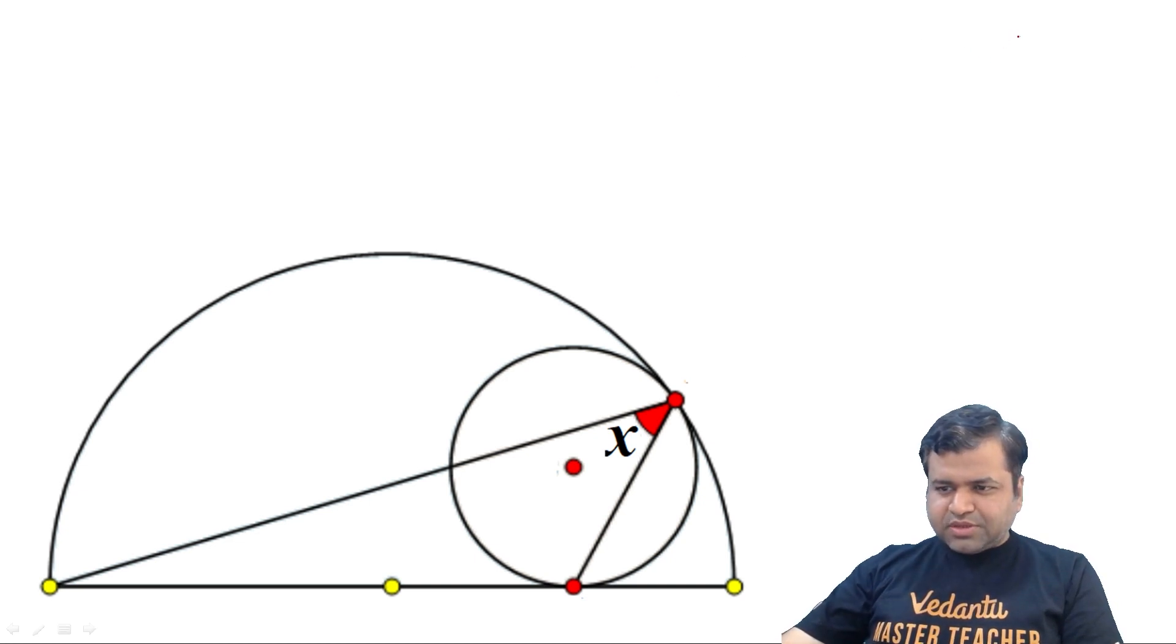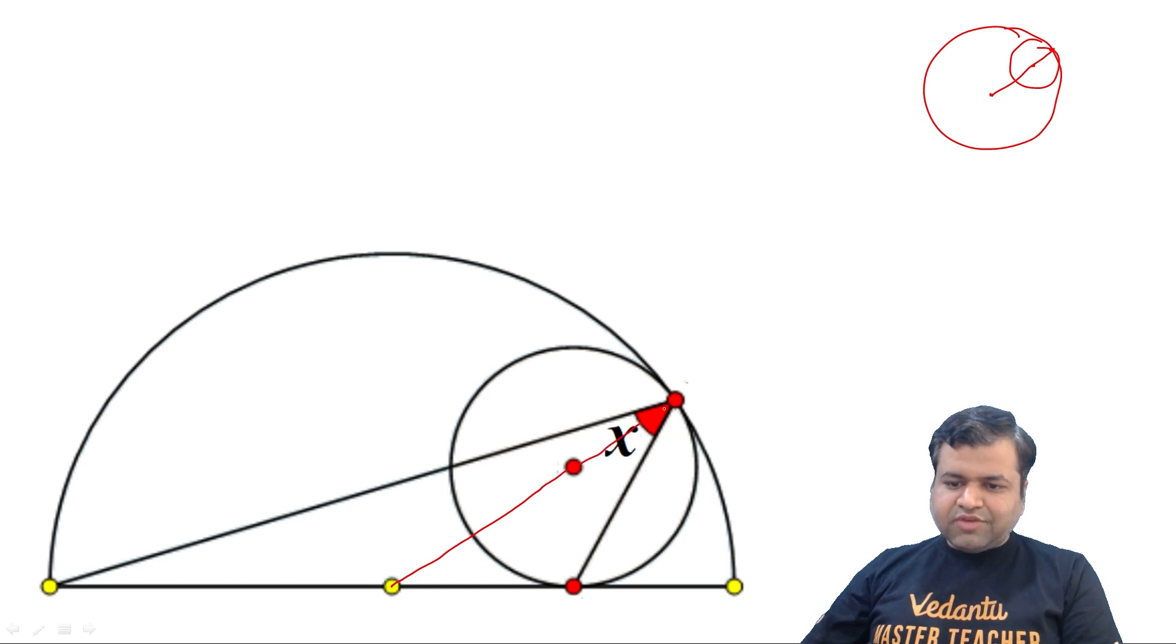First of all, I hope you all know this: whenever two circles touch each other at their centers, whether they touch externally or internally, centers and the point of contact, they all are collinear. So practically, if I get these three points, they will lie in the same straight line. Let's name the points A, B, C, D, E, F. So D, E, F, they are collinear.